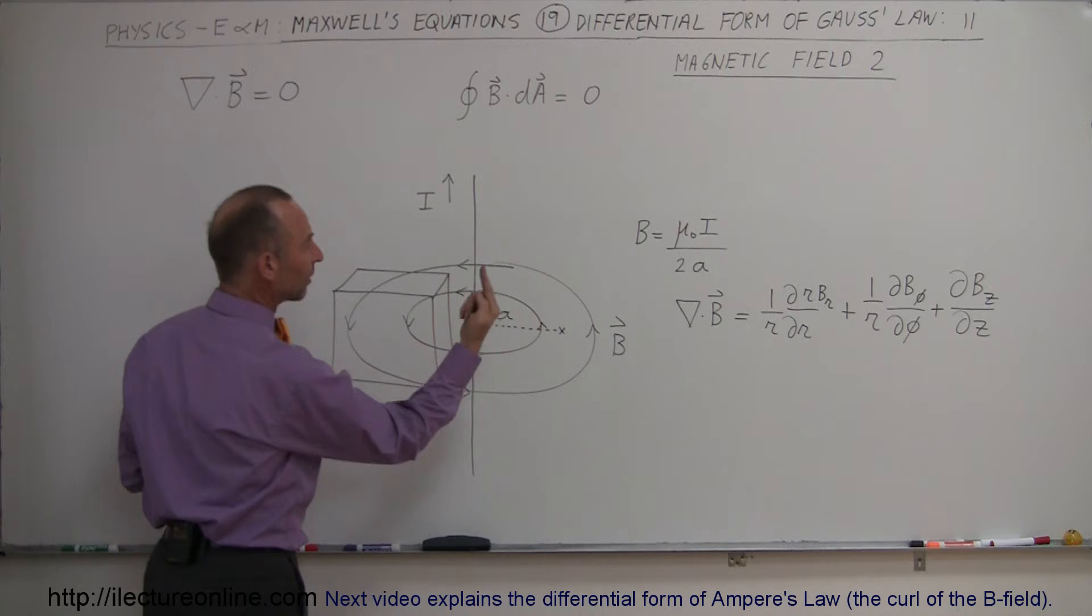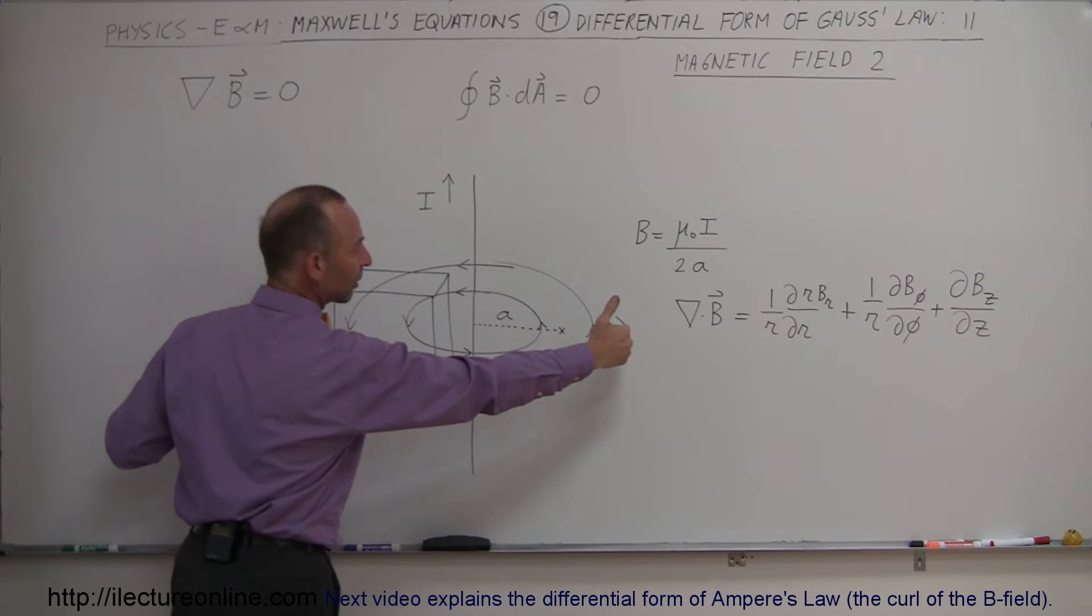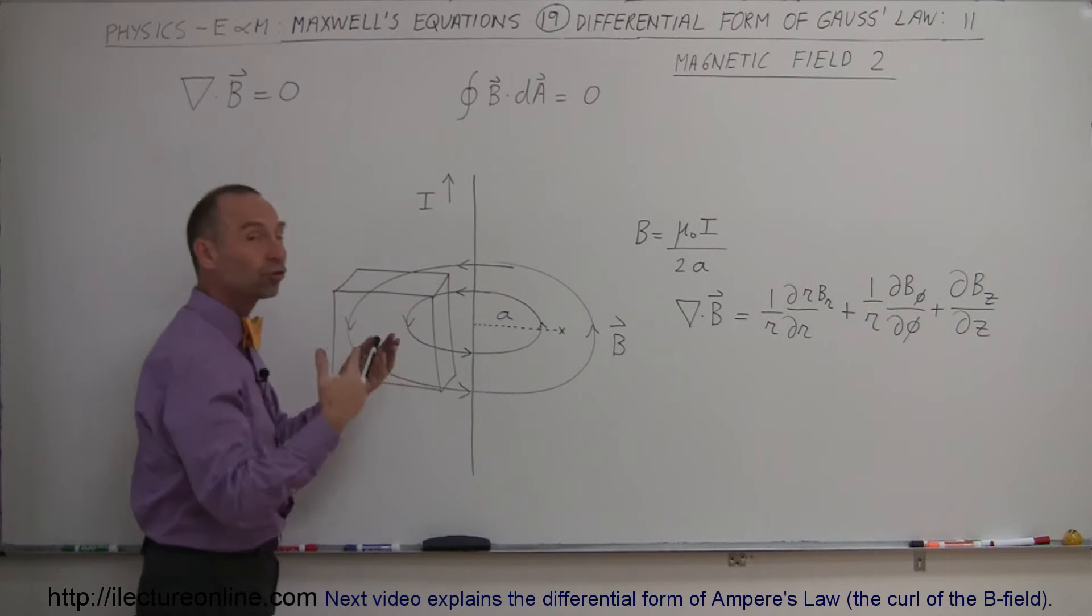So we have magnetic field that exists around the wire like that and the farther out you go the weaker the field, the closer you get the stronger the field.